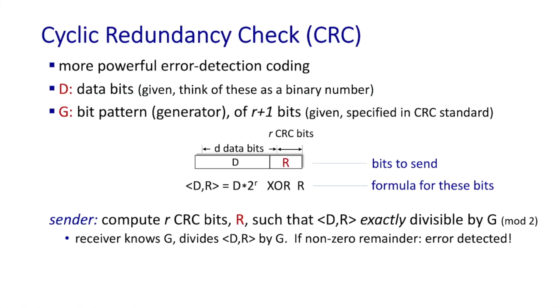Since the receiver knows G, it's going to take the received bits, divide by G, and if there's a non-zero remainder, then it will be able to detect an error.